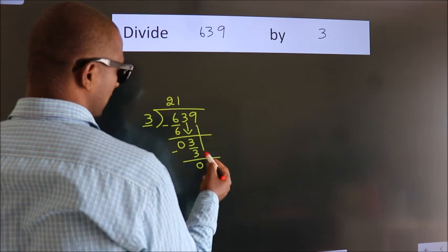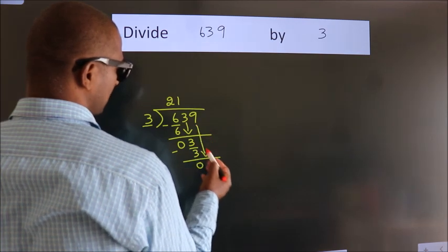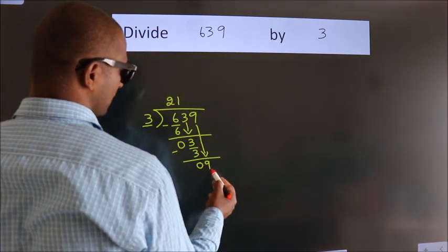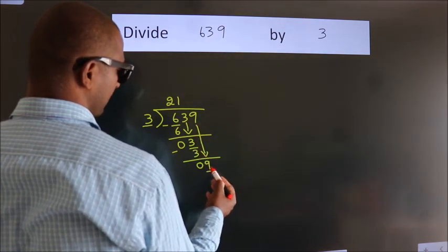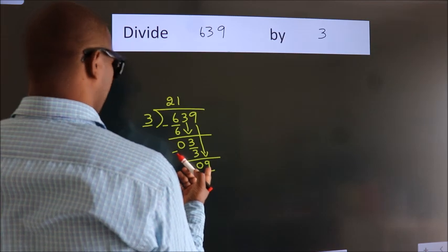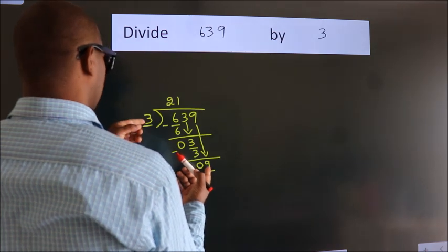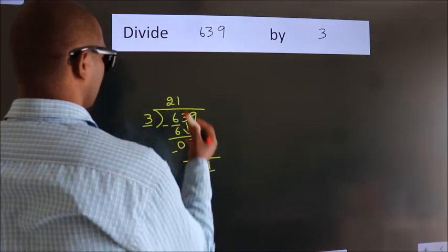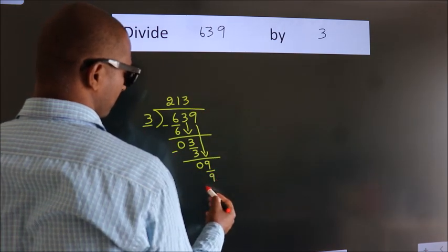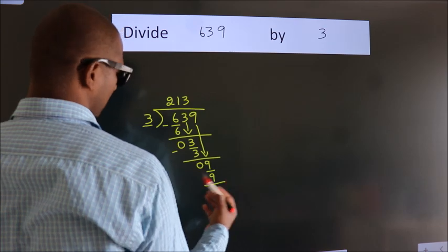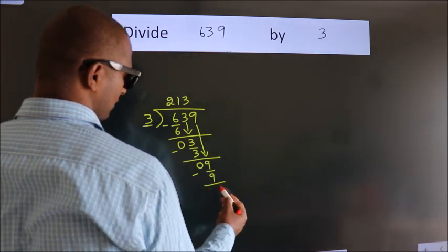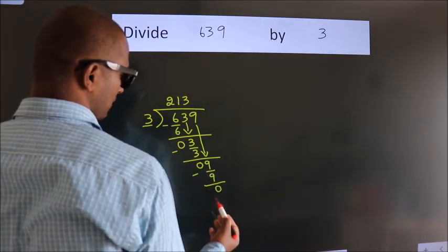After this, bring down the beside number. So, 9 down. So, 9. When do we get 9? In 3 table. 3 3's, 9. Now, we subtract. We get 0.